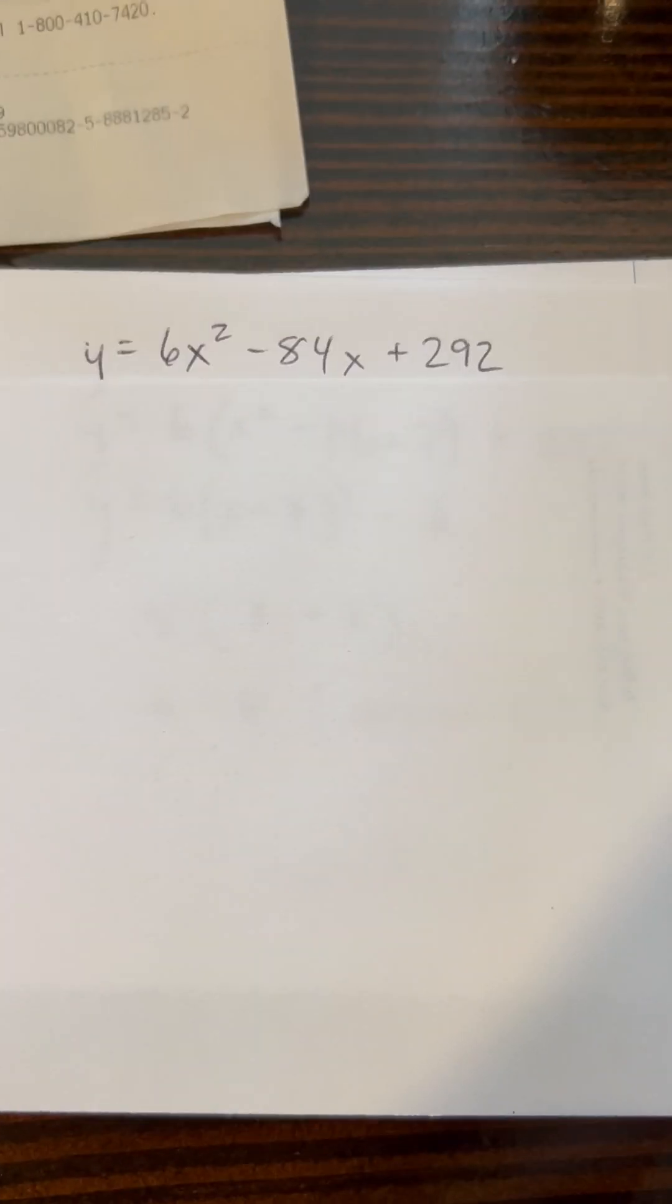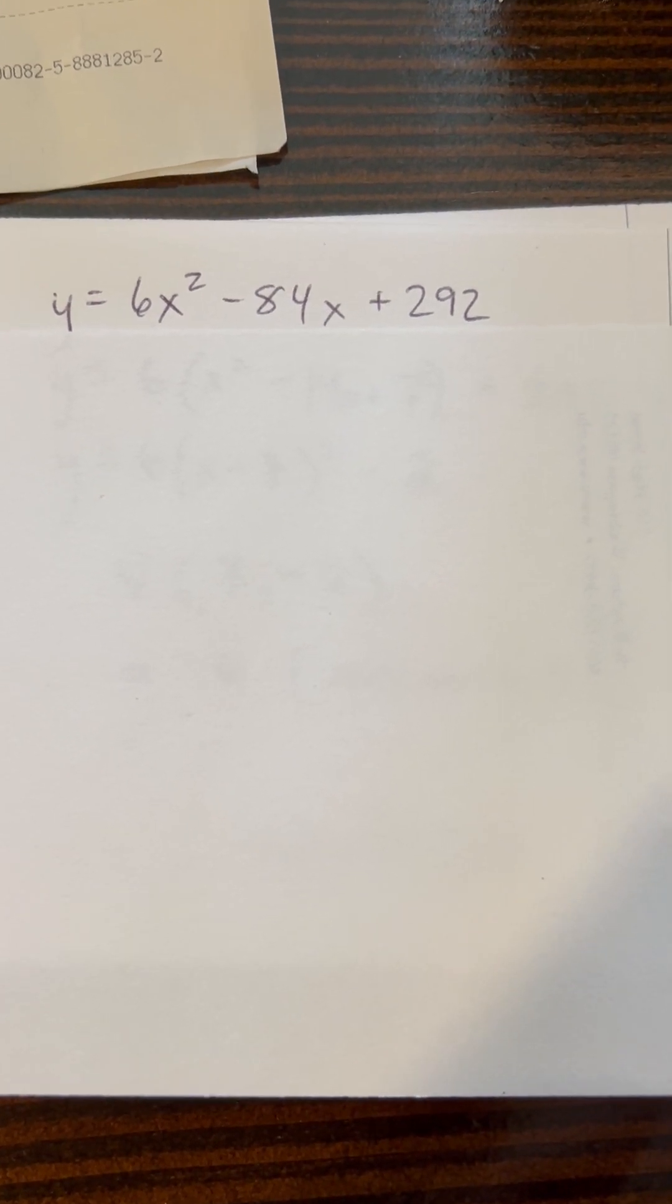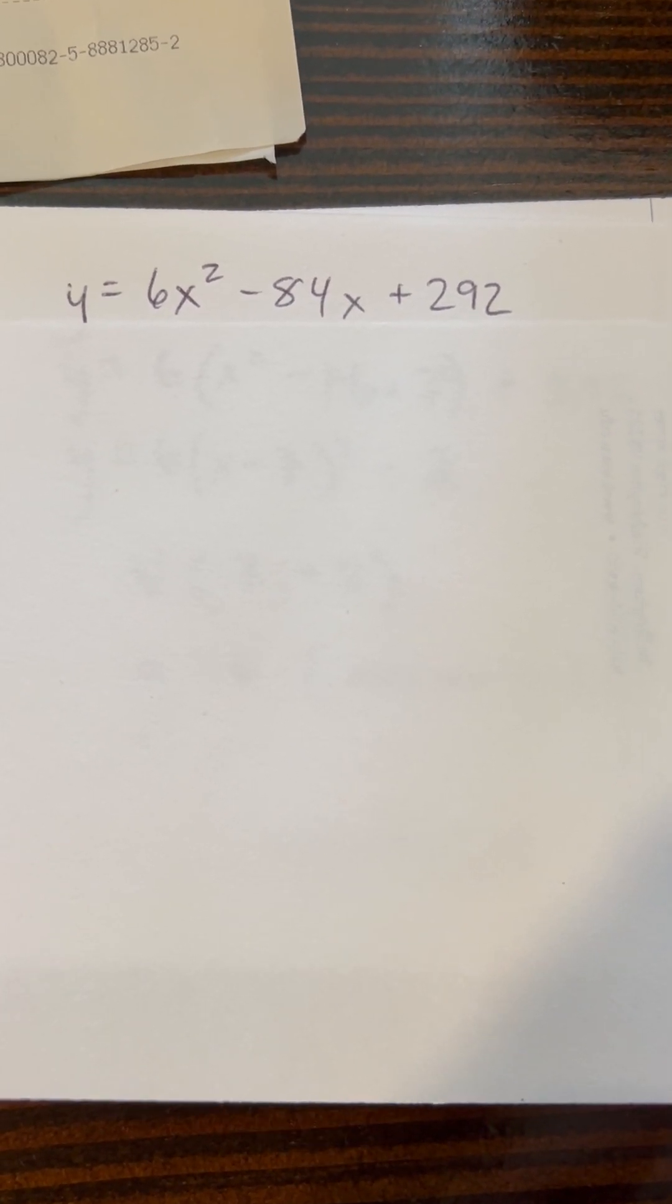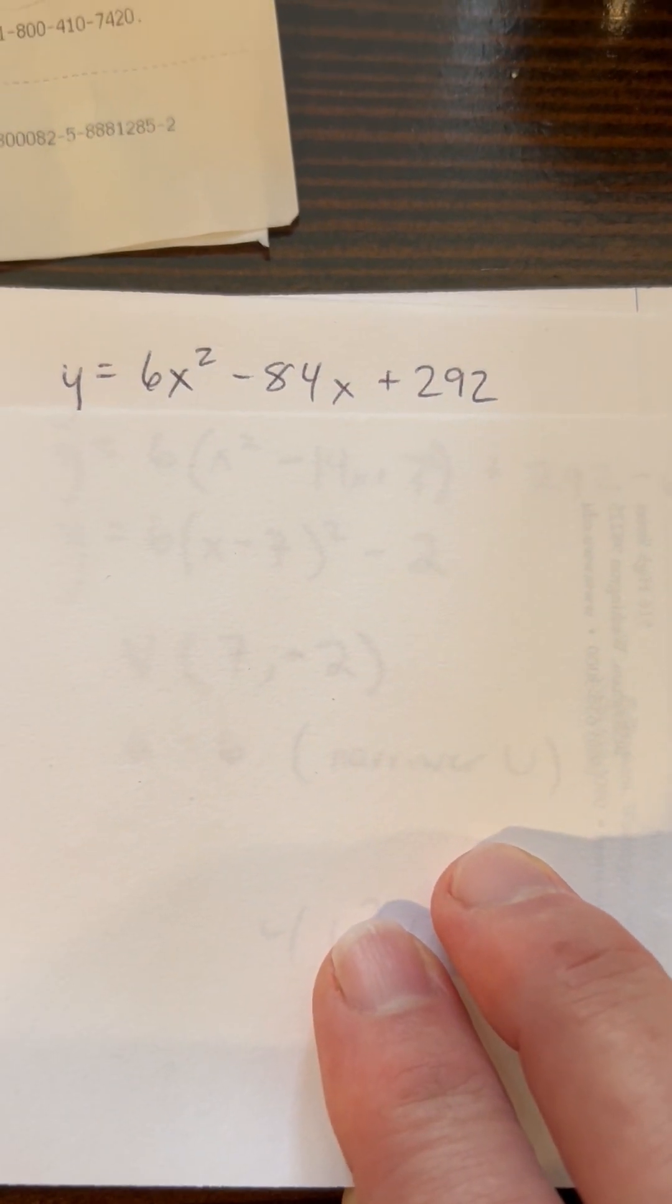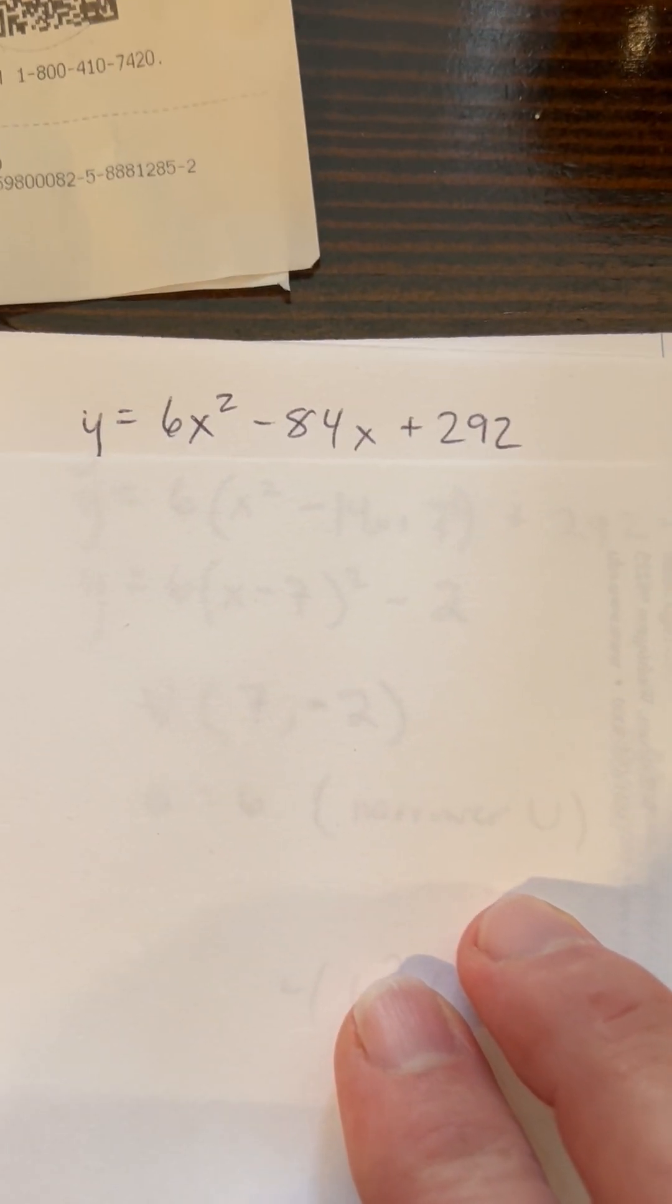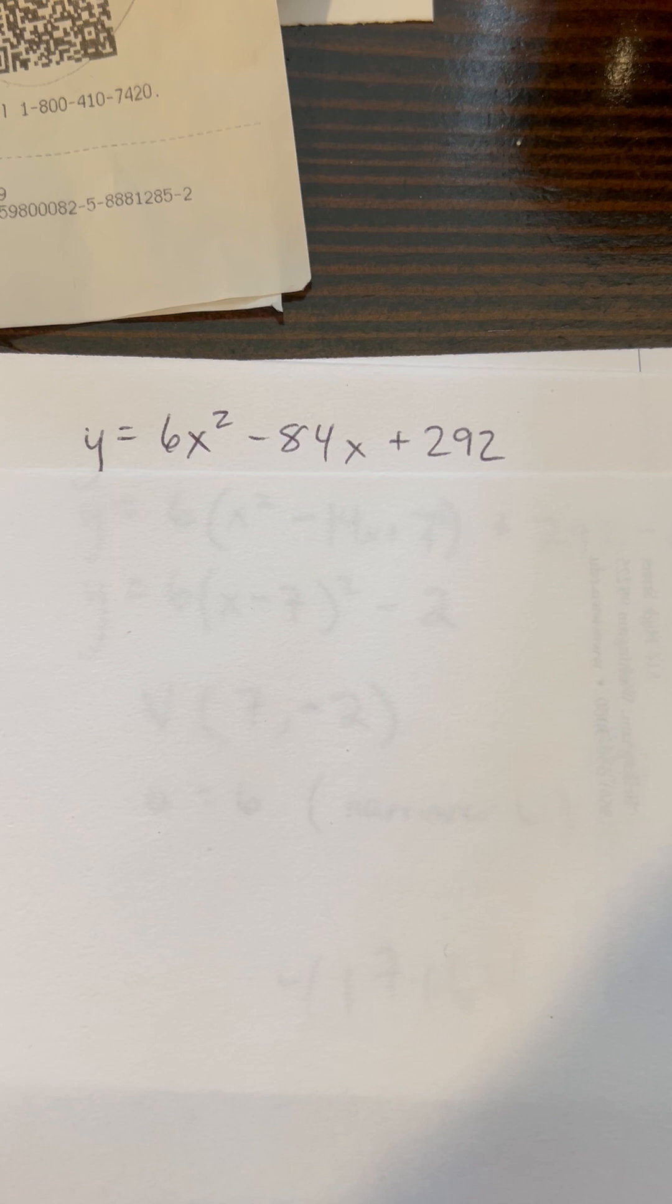Okay, today I'm going to show you how to complete the square when the lead coefficient is not 1. So I've given you one here, 6x² - 84x + 292 is equal to y or f(x).